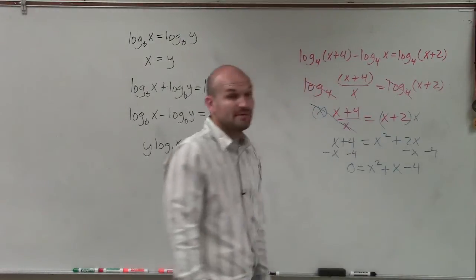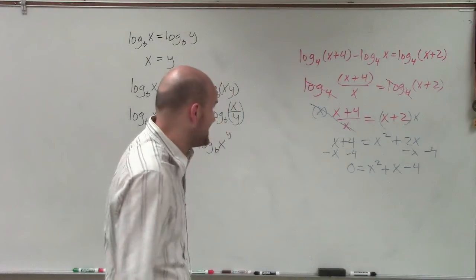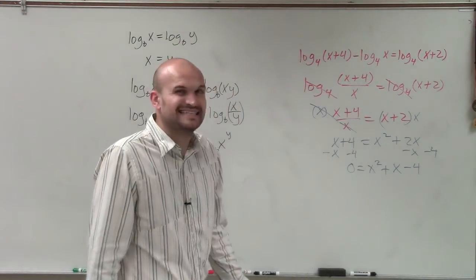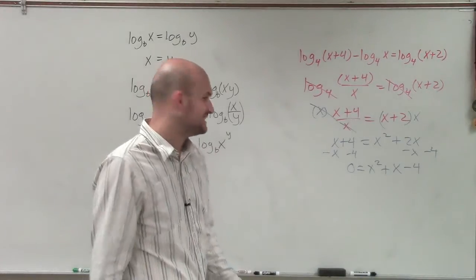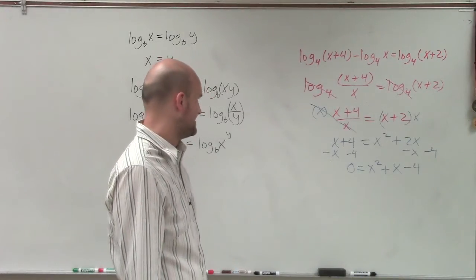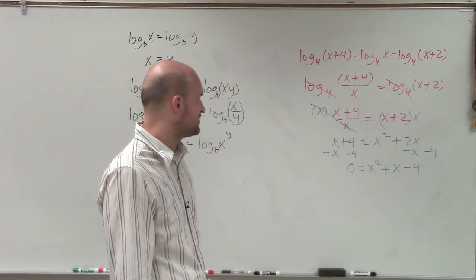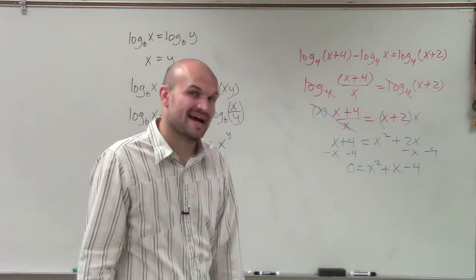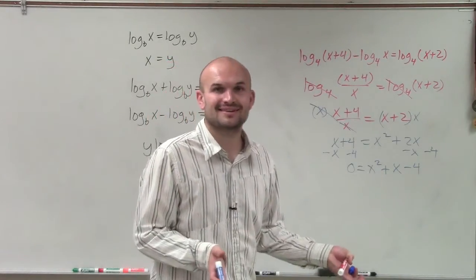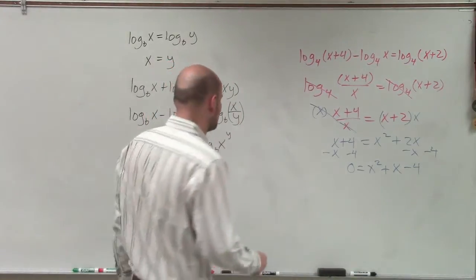Therefore, I need to determine what two numbers multiply to give me negative 4 but add to give me 1. I'm not seeing any two numbers that are going to work. So therefore, ladies and gentlemen, I have to now go to the lovely quadratic formula.